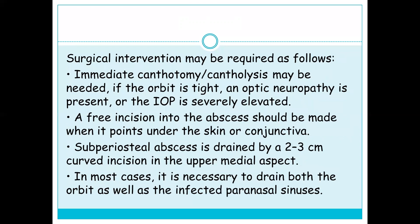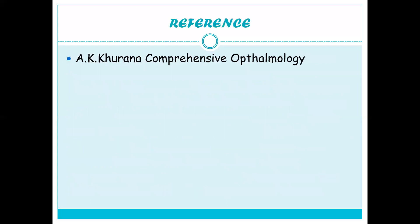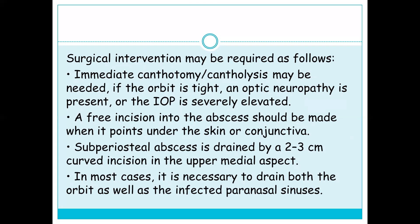Surgical intervention is indicated for unresponsiveness to antibiotics, decreasing vision, or presence of an orbital or subperiosteal abscess. Immediate canthotomy or cantholysis may be needed if the orbit is tight and optic neuropathy is present or intraocular pressure is severely elevated. Incision into the abscess should be made when it points under the skin or conjunctiva. Subperiosteal abscess is drained by a 2–3 cm curved incision in the upper medial aspect. In most cases it is necessary to drain both the orbit and the infected paranasal sinuses. That concludes our discussion of preseptal and orbital cellulitis — please like, subscribe, and comment. Thank you.